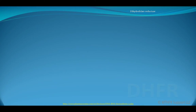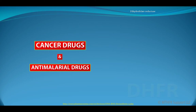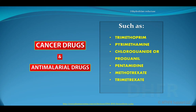Certain drugs used to fight cancer and anti-malarials can inhibit DHFR, such as trimethoprim, pyrimethamine, proguanil (chloroguanide), pentamidine, methotrexate, and trimetrexate.